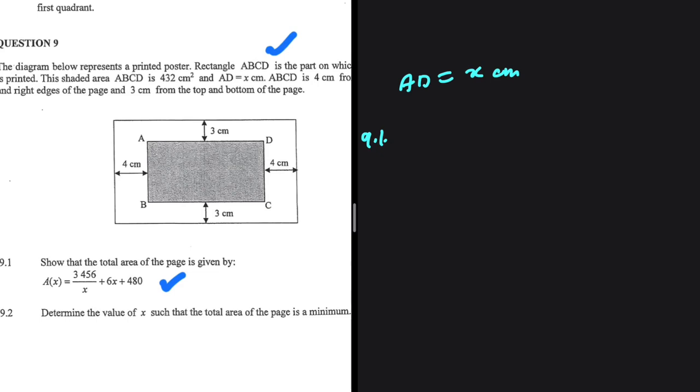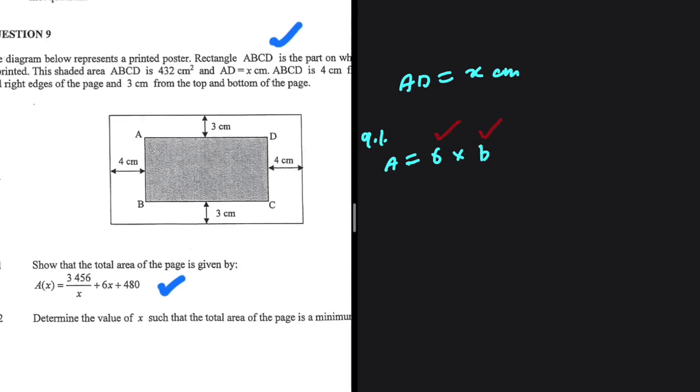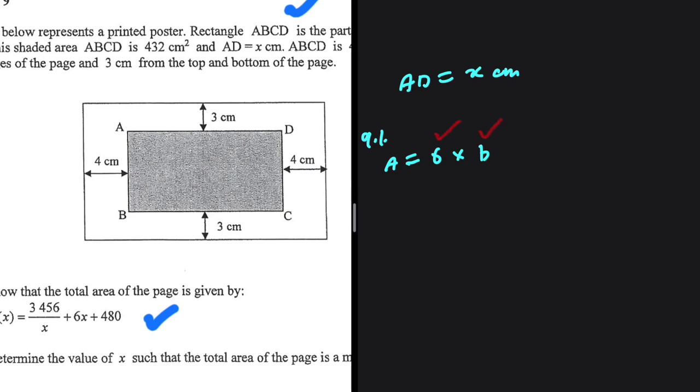We have a rectangle so the area of a rectangle is the length multiplied by the breadth. So let's go ahead and see if we can have the length and the breadth in terms of x and multiply in order to find the total area. Well we know that AD is x cm. So from A to D we have x cm.